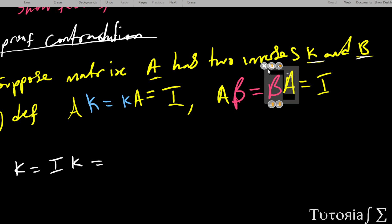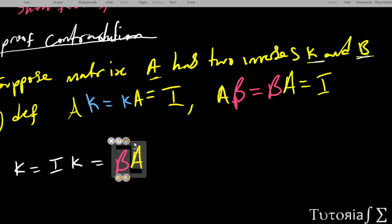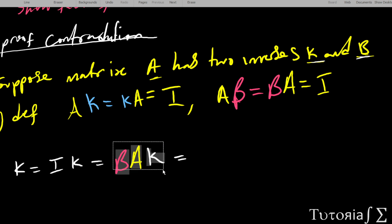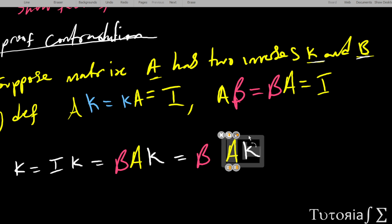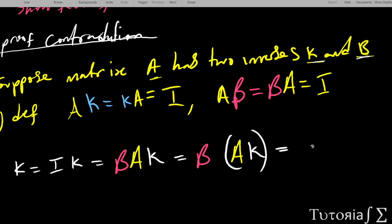So we replace the identity with B times A, giving us B times A times K. We can then group A and K together: B times (A times K). Since B is the inverse of A, A times K equals the identity I, so this becomes B times I.